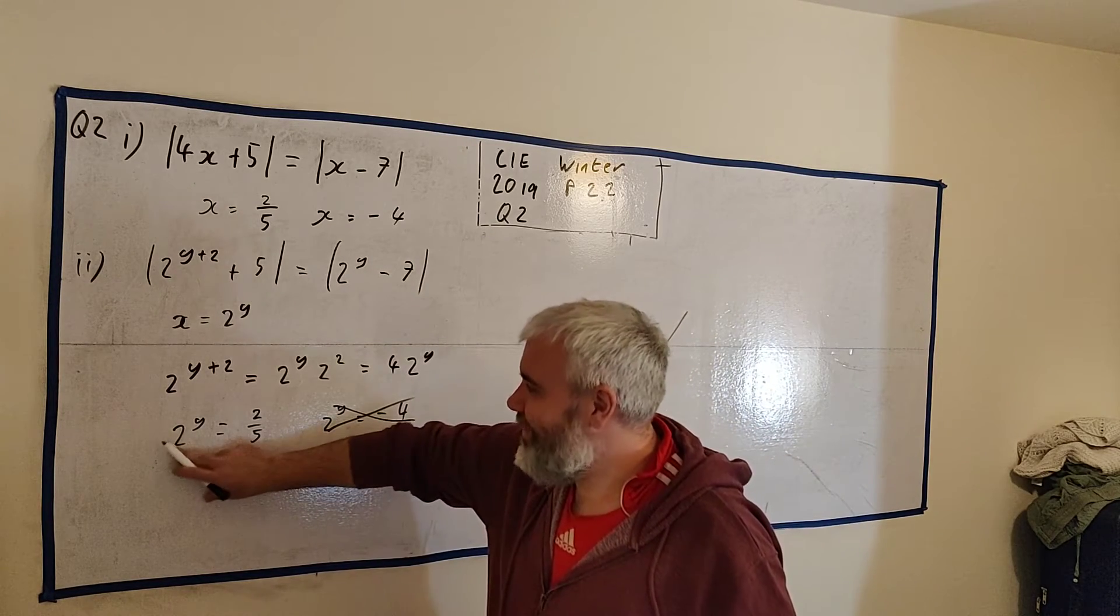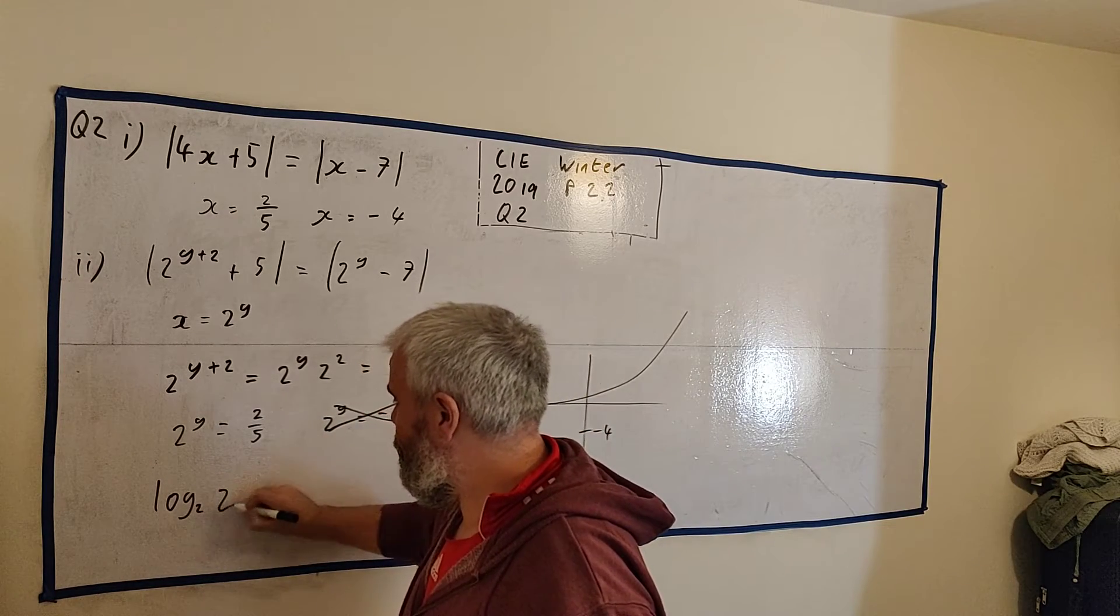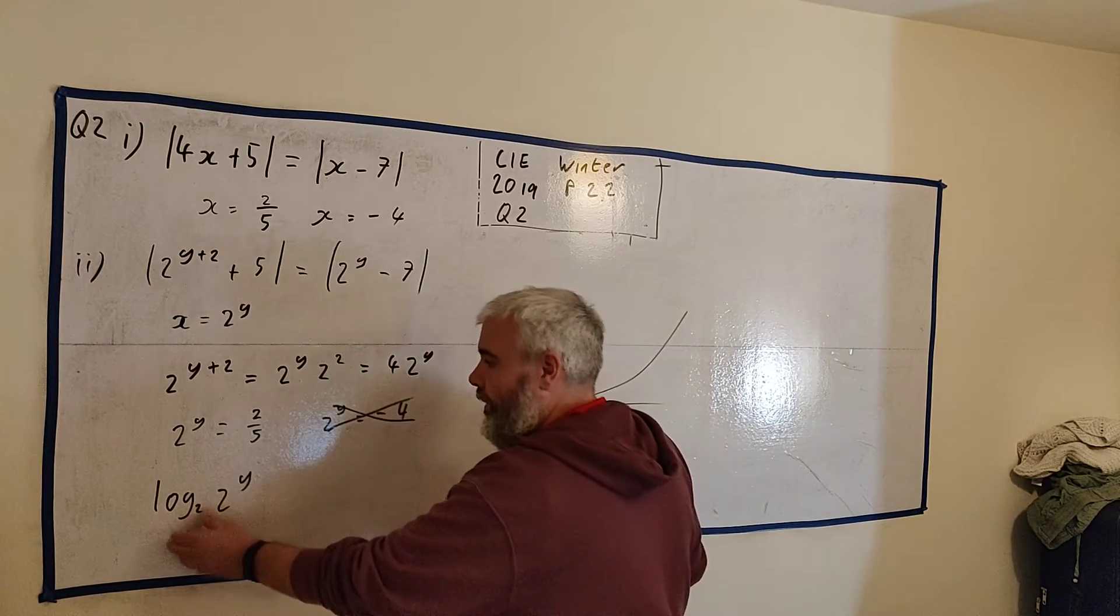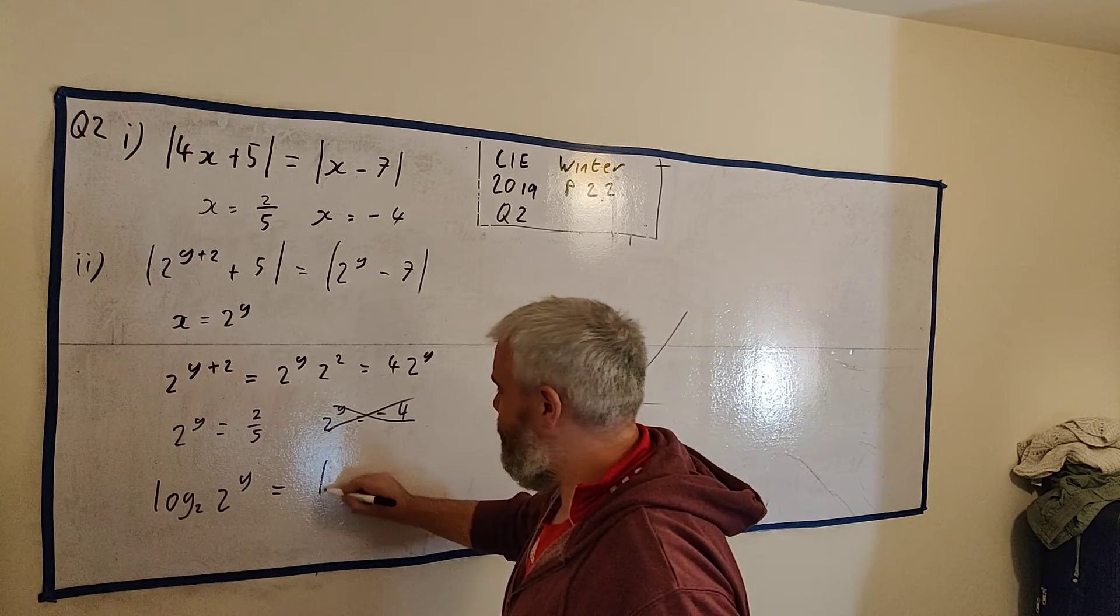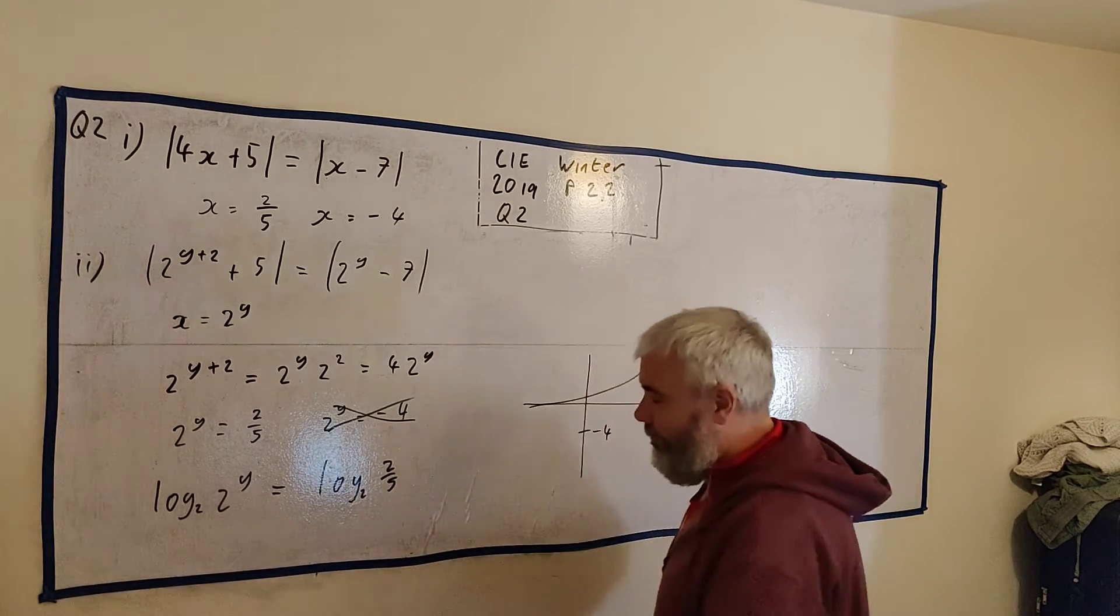So how do we do that? We just need to get rid of this 2. And logarithms do that. If we take a log to the base 2, 2 to the power of y. And to be fair, we have to do that to both sides. Log to the base 2, 2 over 5.